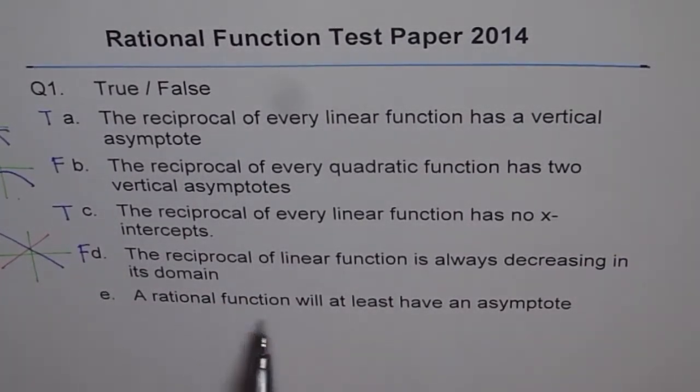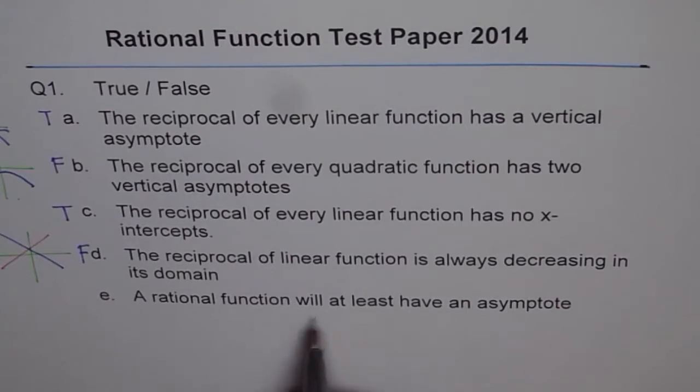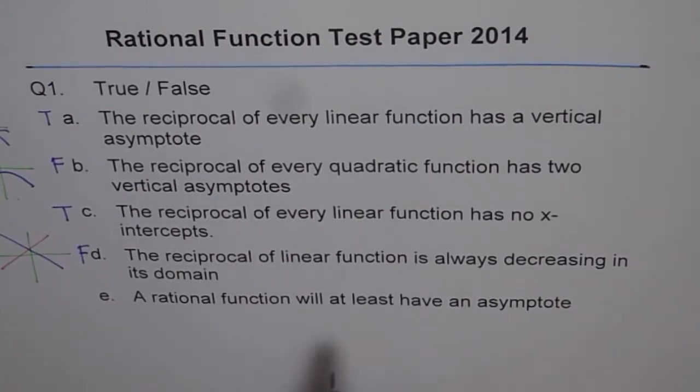A rational function will at least have an asymptote. So many students get that one wrong. There could be so many rational functions which will not have any asymptote. So this is not right. This is false.